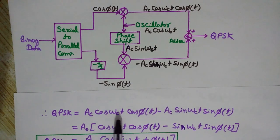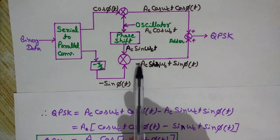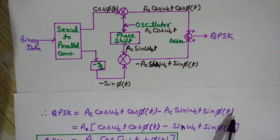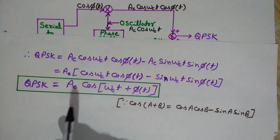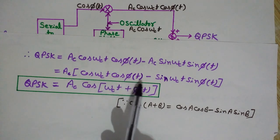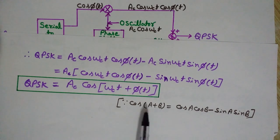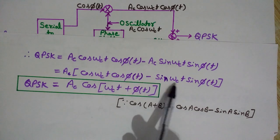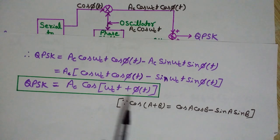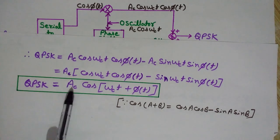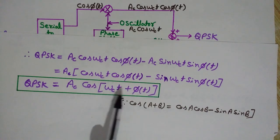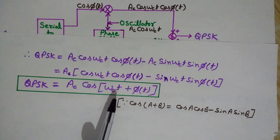Adding the two terms gives: Ac·cos(ωct)·cos(φ(t)) − Ac·sin(ωct)·sin(φ(t)). Taking Ac as common: Ac·[cos(ωct)·cos(φ(t)) − sin(ωct)·sin(φ(t))]. This matches the trigonometric identity cos(A+B) = cosA·cosB − sinA·sinB, where A = ωct and B = φ(t). So we can write it as Ac·cos(ωct + φ(t)).